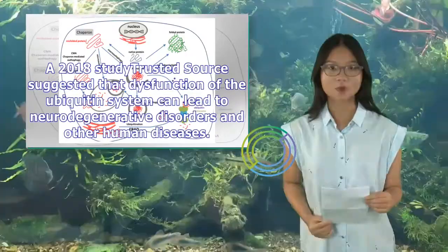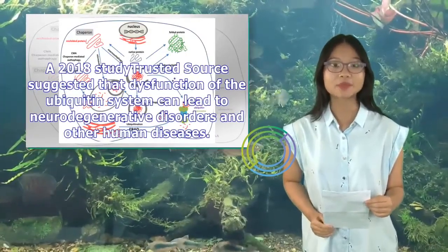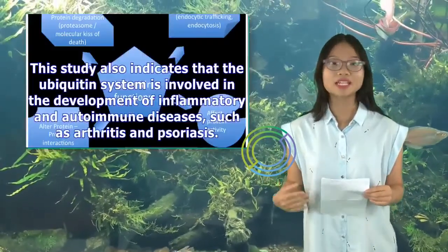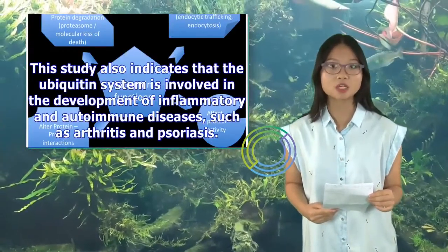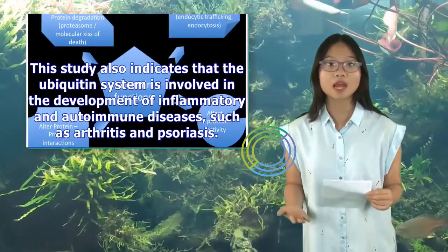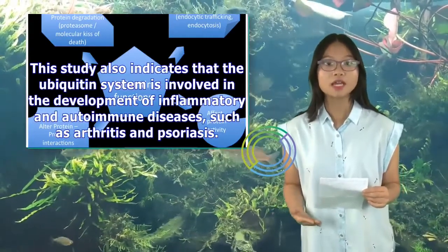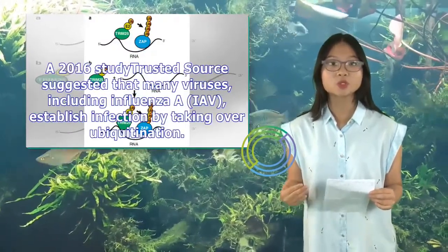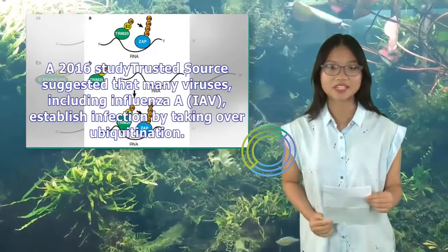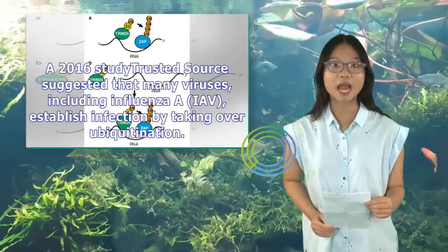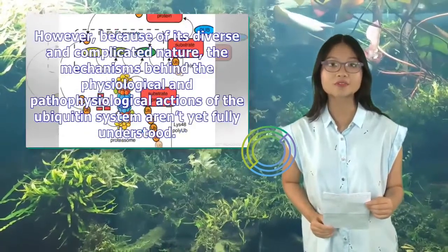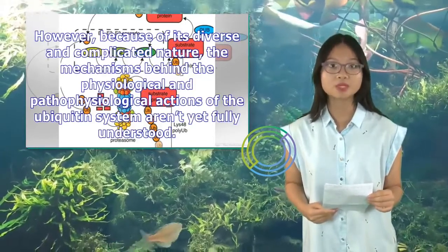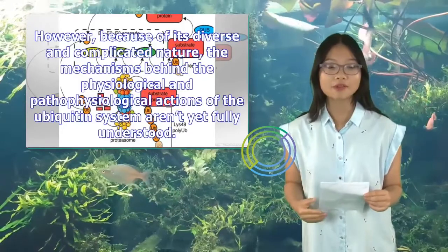A 2018 study suggested that dysfunction of the ubiquitin system can lead to neurodegenerative disorders and other human diseases. This study also indicates that the ubiquitin system is involved in the development of inflammatory and autoimmune diseases, such as arthritis and psoriasis. A 2016 study suggested that many viruses, including influenza A (IAV), establish infection by taking over ubiquitination. However, because of its diverse and complicated nature, the mechanisms behind the physiological and pathophysiological actions of the ubiquitin system aren't yet fully understood.